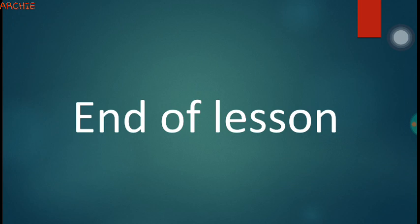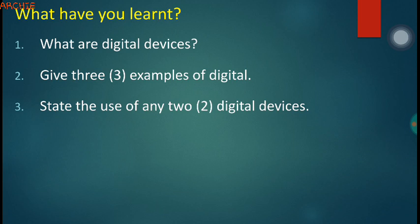Now we end our lesson here. We were able to know what a digital device is and some examples of digital devices. To be sure: a digital device is any device that is able to store, process, and send digital information. Examples we mentioned include the computer, the mobile phone, the MP3 player, the megaphone, and so on.